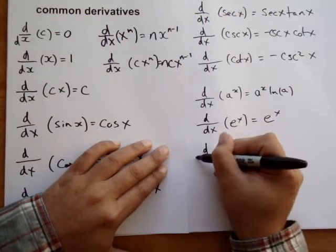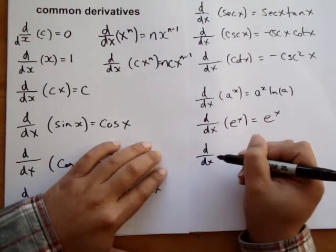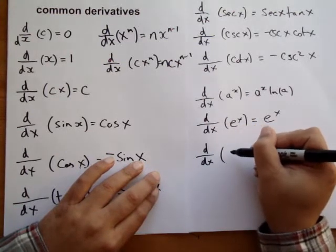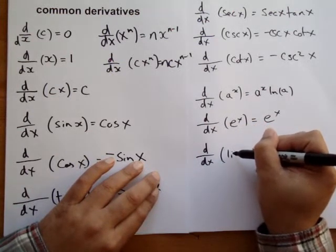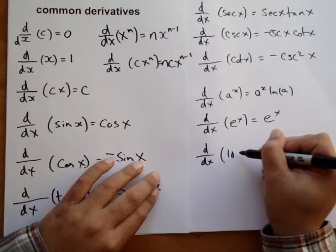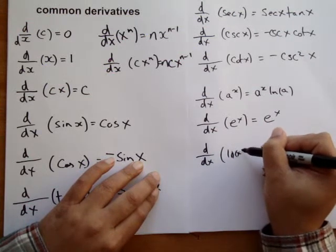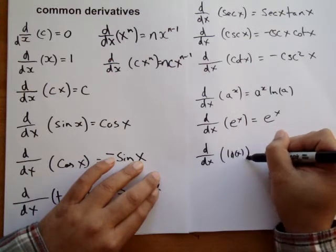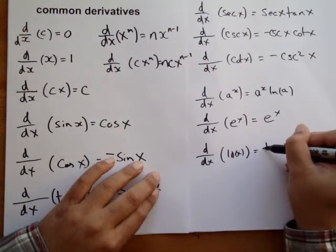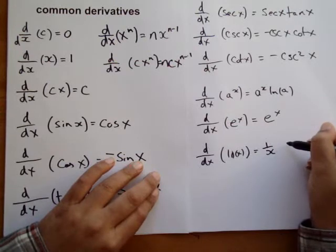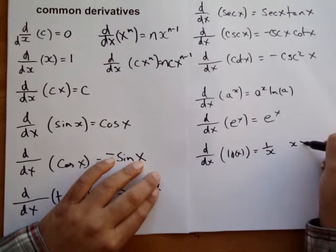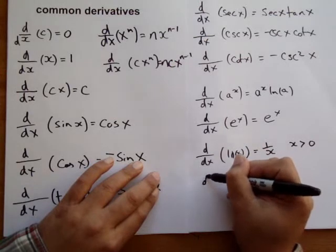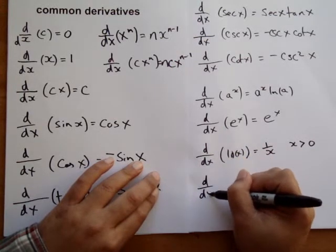The derivative of natural log of x is 1 over x where x is greater than 0.